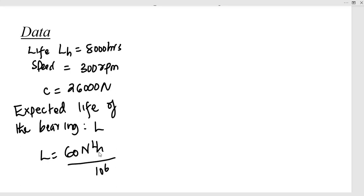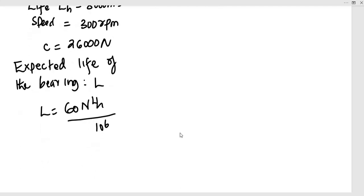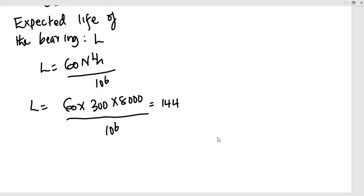Then N is the speed in revolutions per minute, and 60 is the conversion factor. So L is going to be 60 times N, which is 300, times L_h, which is 8,000, then we divide it by 10 power 6. And this is going to be L equal to 144 million revolutions.